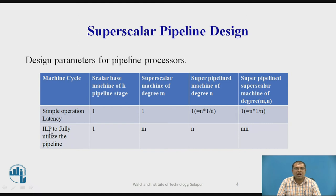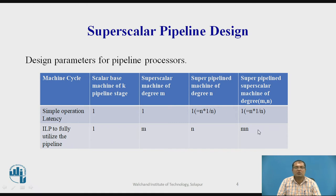Coming to ILP — instruction level parallelism — to fully utilize the pipeline: for the scalar machine it is 1, for the superscalar it is M, for the superpipeline it is N, and for the superpipeline superscalar machine it is M×N.